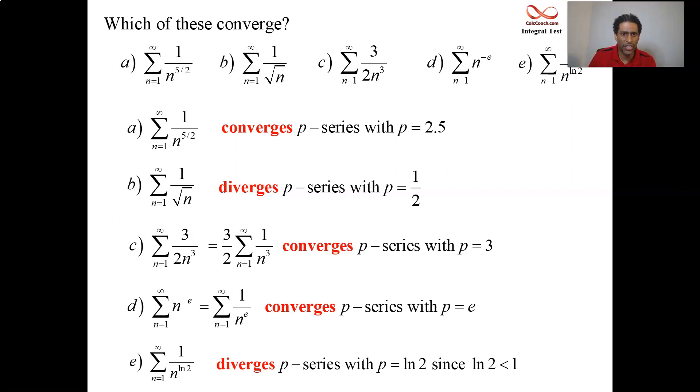So p-series, whenever you can, it's a gift. Somebody gives you a series, this is your test to use: one over n to the p, if it's in this format. Make one small alteration on it though, and you're not allowed to use it. For instance, if you have something like letter b, one over root n, something as simple as an addition of a constant to that underneath the radical, it's no longer a p-series. It'll be like a p-series. In the next section we'll look at comparing to a p-series using the comparison test, but it needs to be exactly one over n to the p, nothing else but a constant maybe, which you can factor out.